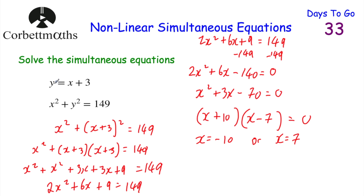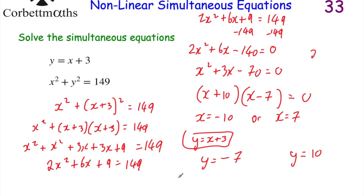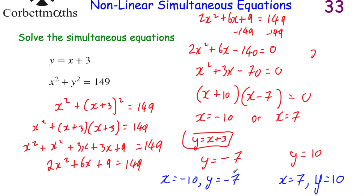We've got our values for x, now we substitute into y equals x plus 3. If x equals minus 10, then y equals minus 10 plus 3, which is minus 7. If x equals 7, then y equals 7 plus 3, which is 10. So our solutions are x equals minus 10 and y equals minus 7, or x equals 7 and y equals 10.